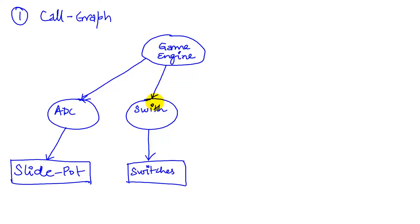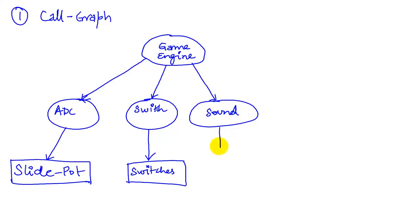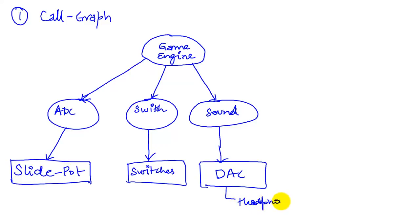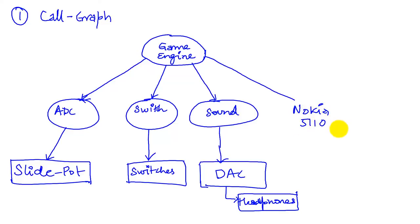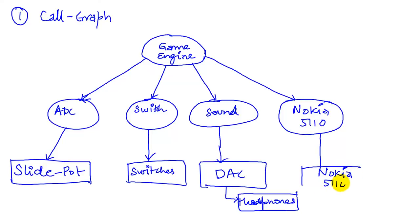The third module is the sound module — we want our game to be fun and sound fun. The sound module will interact with the DAC hardware, which is connected to the headphones. The fourth module is the Nokia display module — the Nokia 5110 — responsible for all the graphics and interfacing with the Nokia 5110 LCD display hardware.